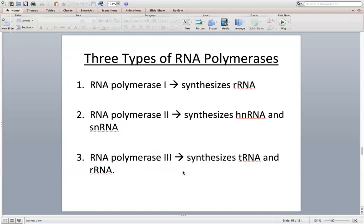In eukaryotes specifically, there are three different types of RNA polymerases. Only one of these RNA polymerases is going to be involved in the transcription of mRNA, and that's going to be RNA polymerase 2.